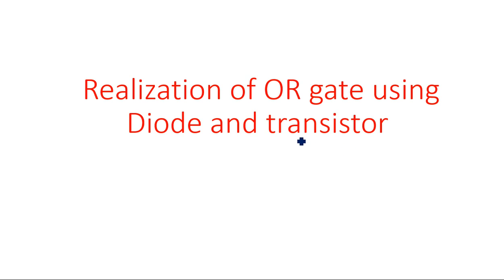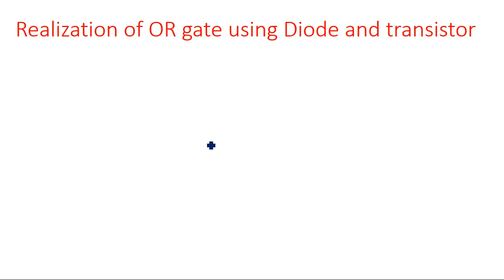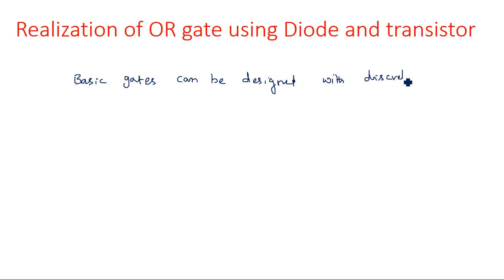In this video I am going to explain the realization of OR gates using diodes and transistors. Logic gates like OR gate, AND gate, and any type of gate can be designed using discrete components like diodes or transistors. A diode alone cannot act as a gate — we need a diode with a resistor, or a transistor with a resistor. Basic gates like AND, OR, NOT, and universal gates or exclusive OR gates can all be designed using these discrete components.